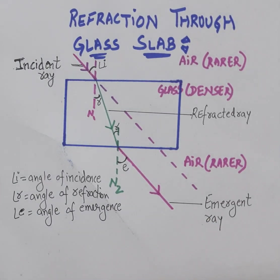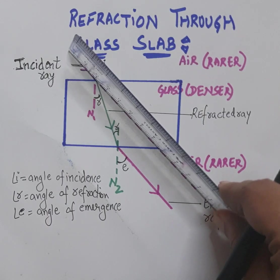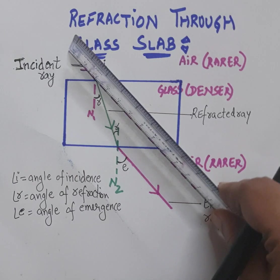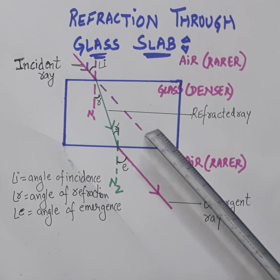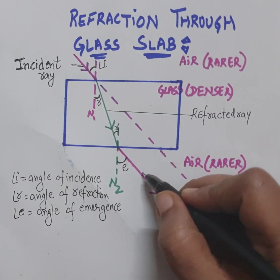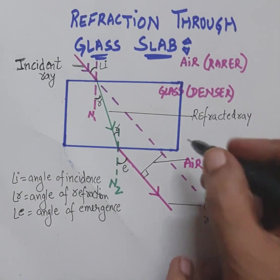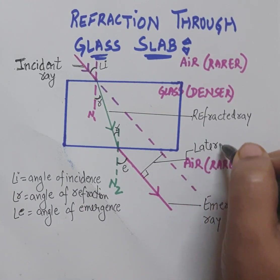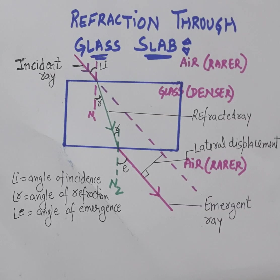In this glass slab, if there was no refraction, if there was no glass slab, the light would have traveled in a straight line along the dotted path. But after refracting two times while passing through the glass slab, the ray of light has been displaced from its original position to a new position via the emergent ray. This perpendicular distance between the original path and the emergent ray is called lateral displacement.